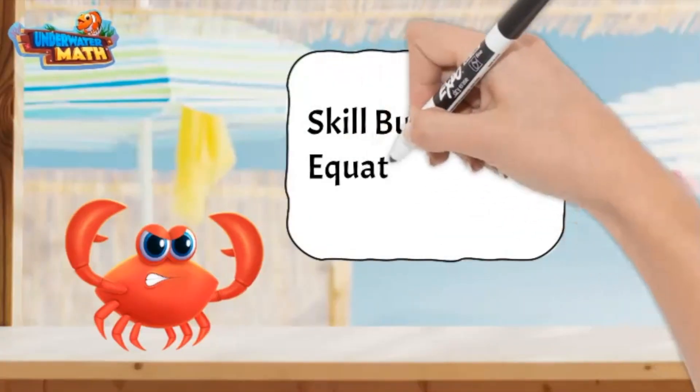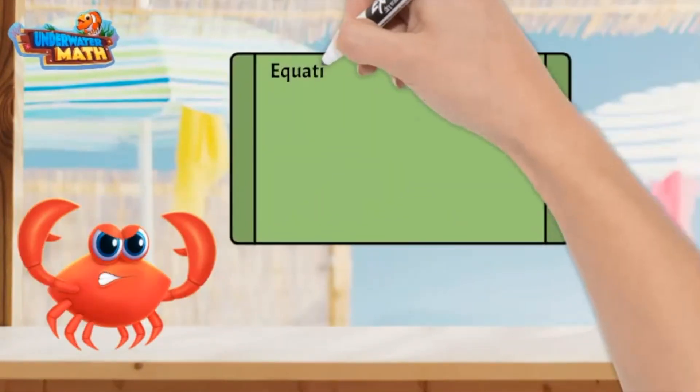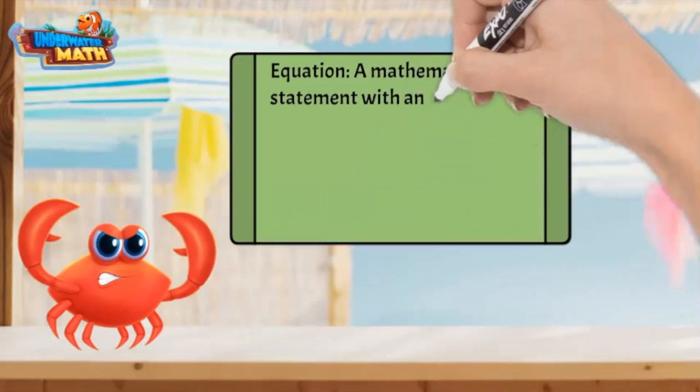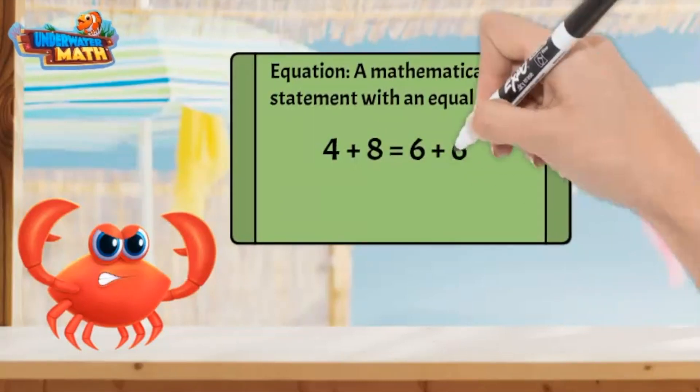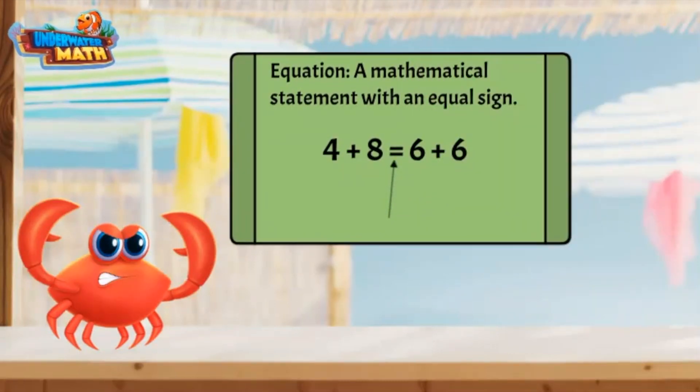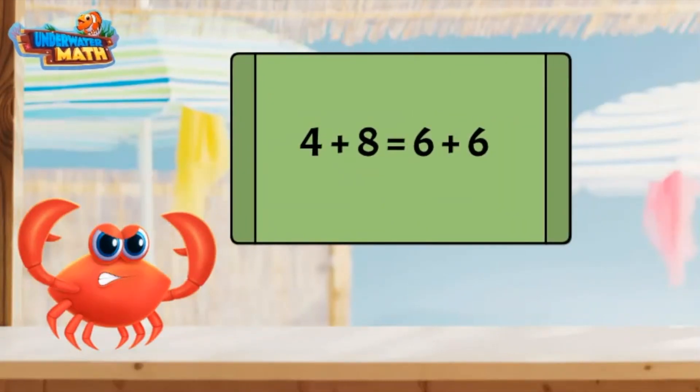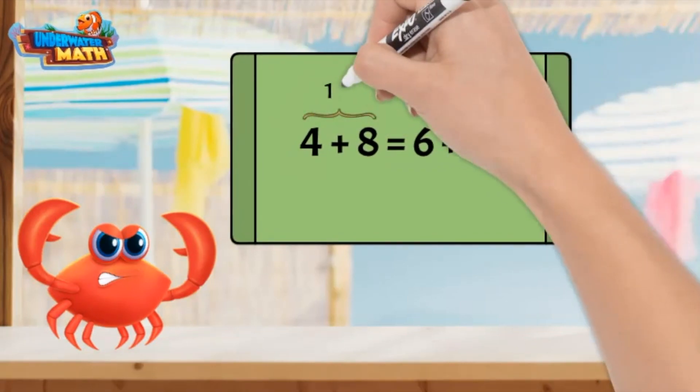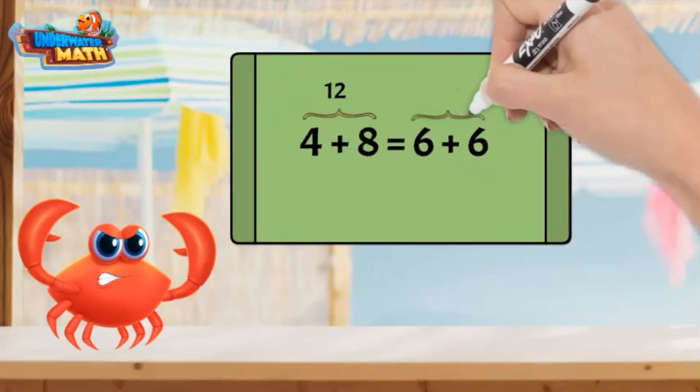Welcome to the beach for today's lesson on equation equality. Equations are mathematical statements with an equal sign. The equal sign shows the expression on the left is equal to the expression on the right. The expression on the left shows 4 plus 8, the value is 12. The expression on the right is equal to 12.